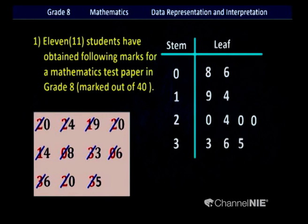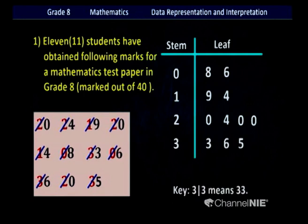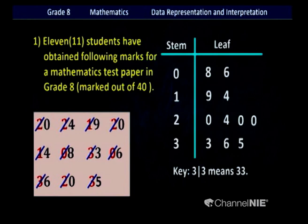There is another important thing in stem and leaf diagrams — you have to write the key. That means you take one of the data values and represent what you mean by putting numbers on the stem and leaf sides. Here my key shows 3 on stem side and 3 on leaf side, meaning the value is 33.